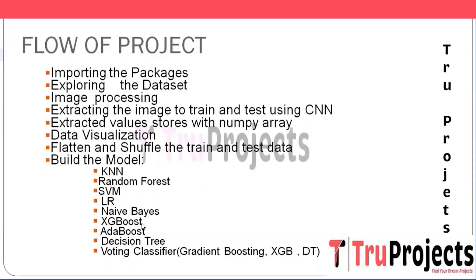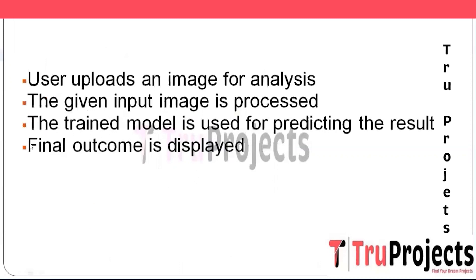Next is AdaBoost, an ensemble learning method that iteratively builds multiple weak learners, assigning more weight to misclassified samples to improve overall accuracy. It is used to classify brain tumor images using CNN features, combining the predictive power of multiple weak classifiers. Next is Decision Tree, a simple and powerful tree-based classification algorithm that partitions the feature space into segments, enabling easy interpretation and visualization. Finally, the Voting Classifier combines predictions from multiple classifiers — specifically gradient boosting, XGBoost, and decision tree — to make the final decision.